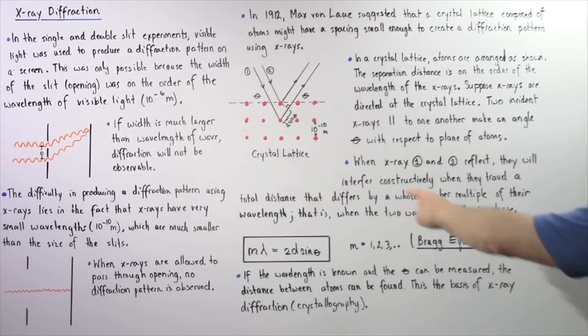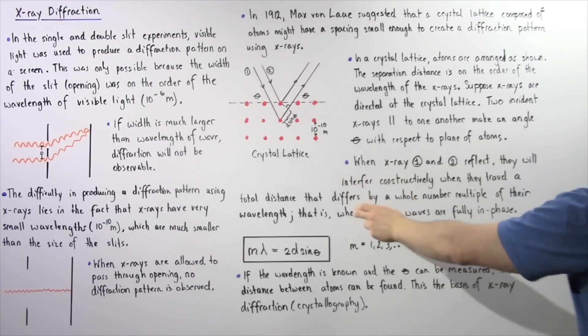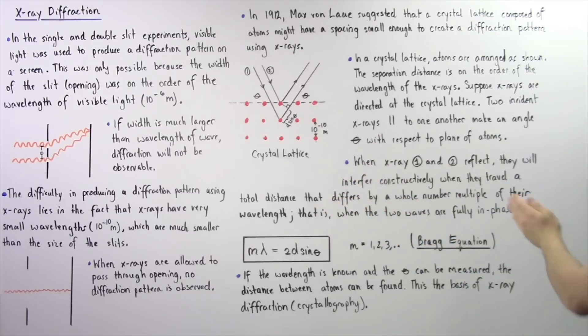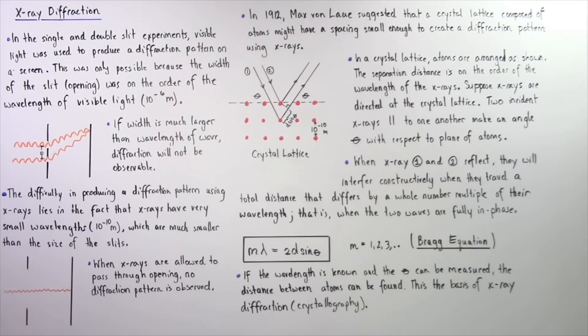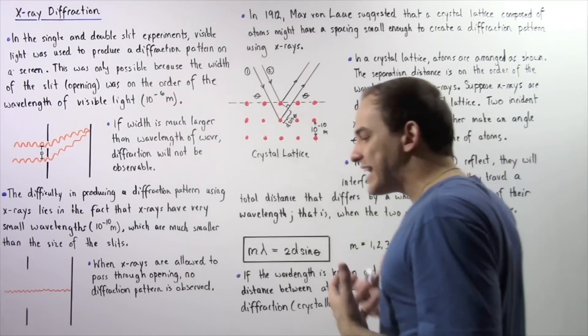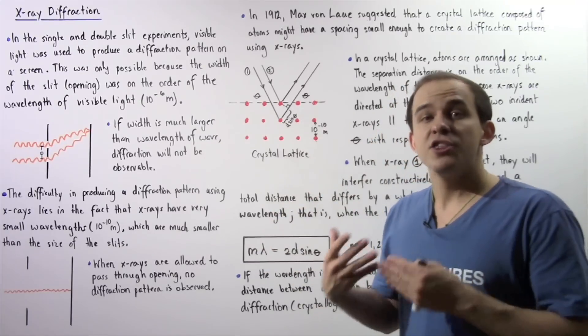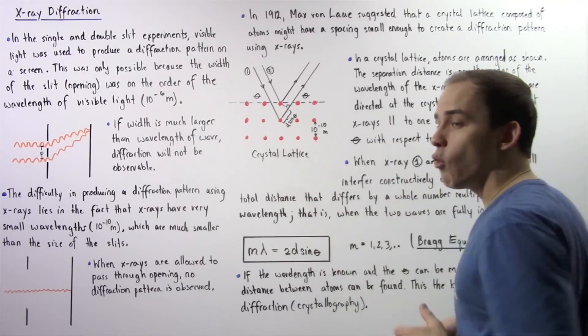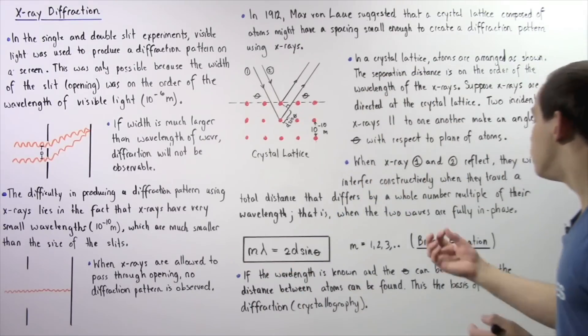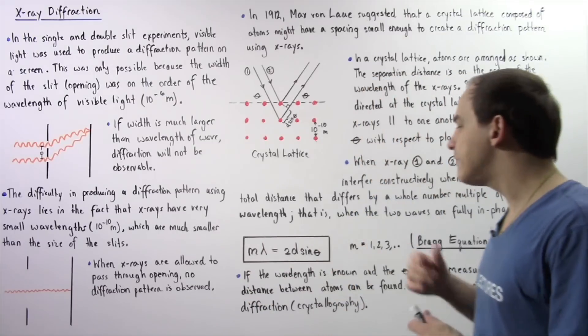Once again, when X-ray 1 and X-ray 2 reflect, they will interfere constructively when they travel a total distance that differs by a whole number multiple of their wavelength, that is, when the two waves are fully in phase. The equation that gives us this relationship, that gives us the location where they will interfere constructively, is given by this formula, which is known as Bragg equation, after the English physicist who derived it.